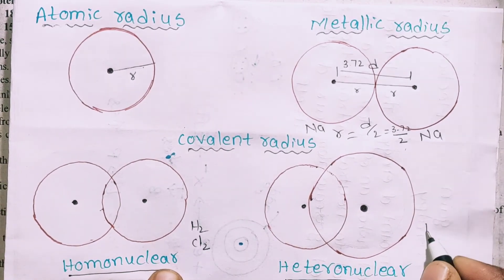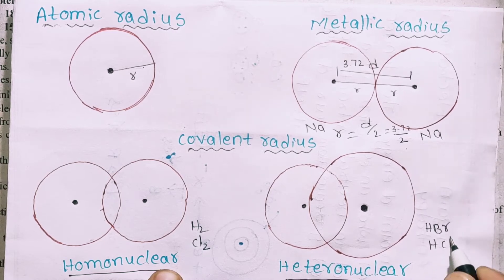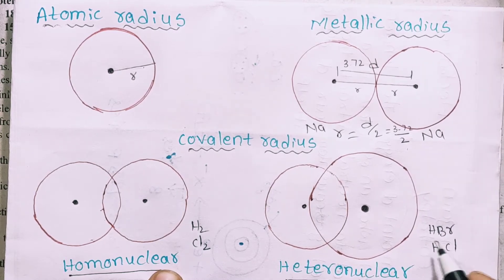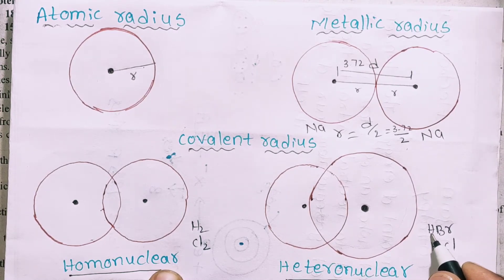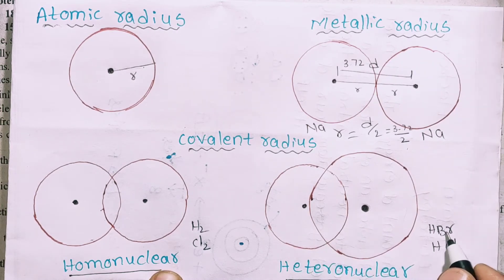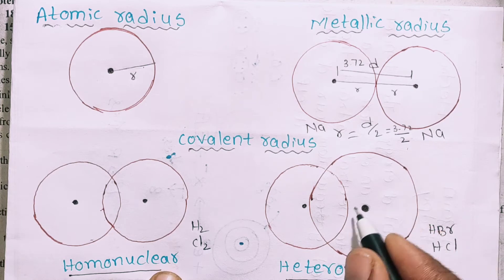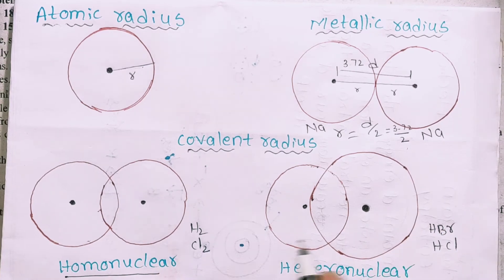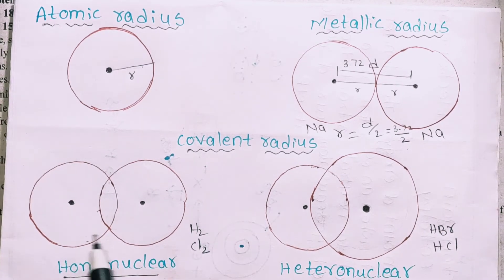Examples of heteronuclear molecules include HBr and HCl. Here same atoms share the same internuclear distance D.